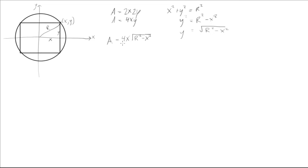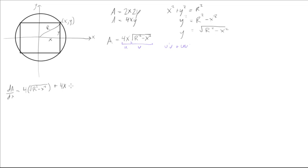Now we want to differentiate this. We have two parts — call them u and v — and we'll use the product rule: u prime v plus u v prime. Differentiating gives dA/dx equals 4 times the square root of r squared minus x squared, plus 4x times negative x times (r squared minus x squared) to the power of negative one half.